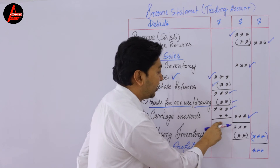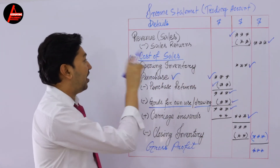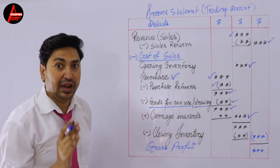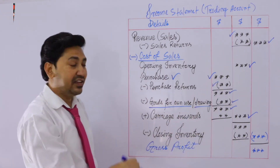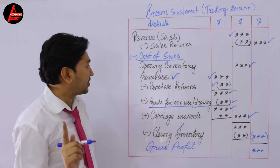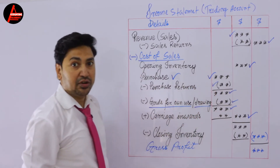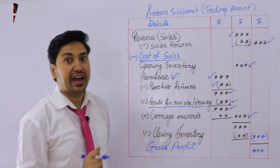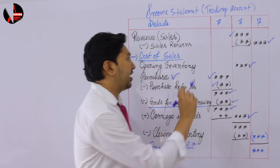We write the answer in the outer column because we have nothing more to calculate with purchase. Once again: write purchase in the first column, subtract your purchase return, subtract goods for own use, then add carriage inwards — whatever answer comes, put it in the middle column.